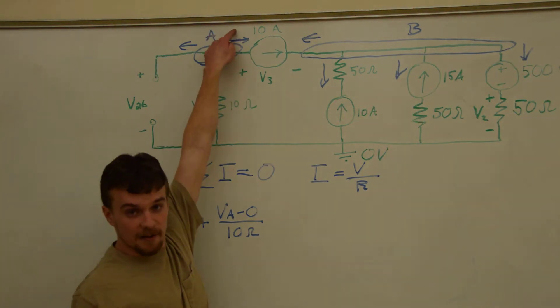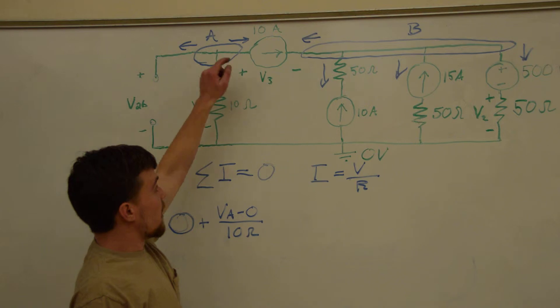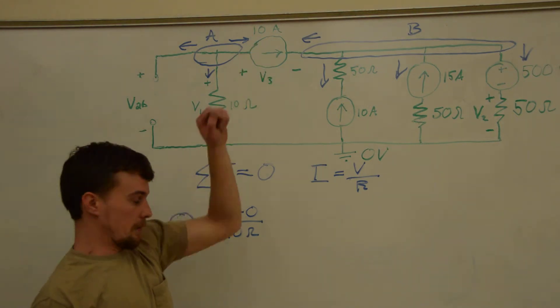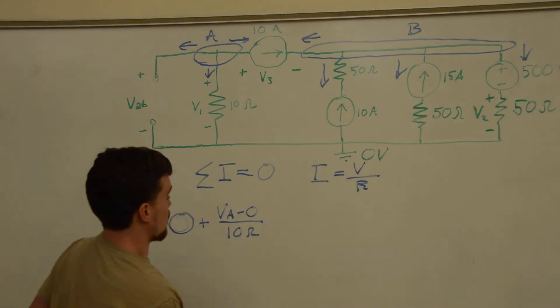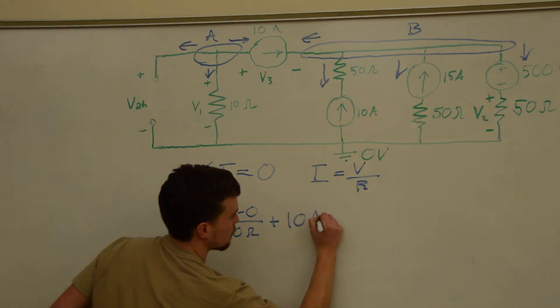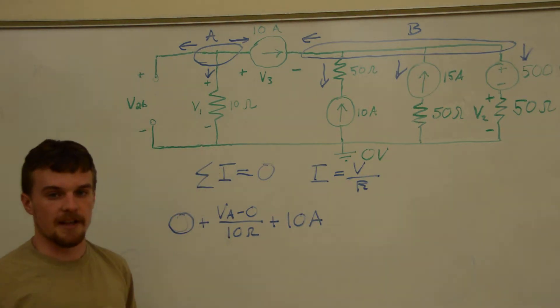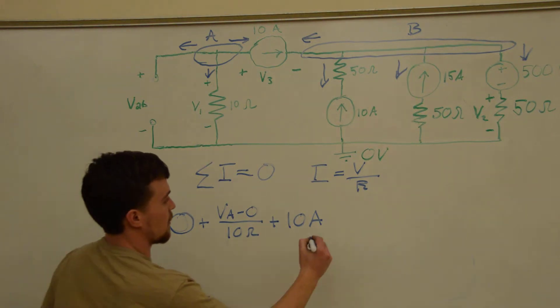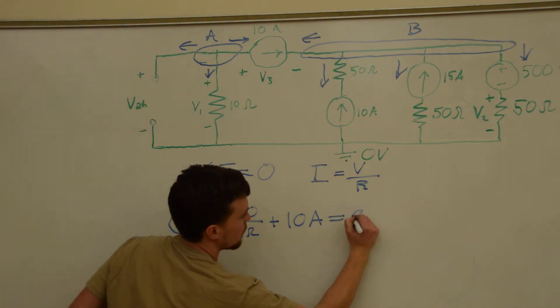Next, this current is defined by that current source, which is 10 amps. Now, since that's all of the currents leaving the node, they sum to zero.